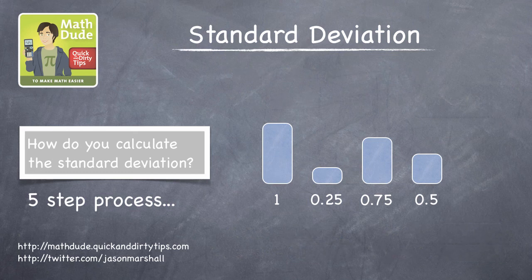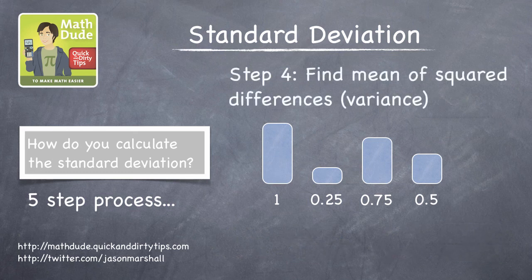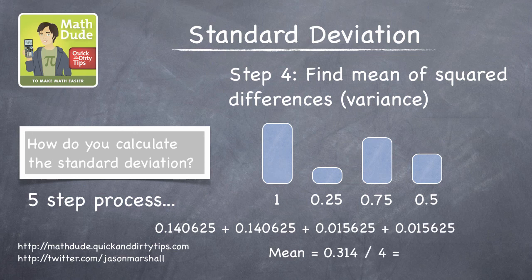Okay, step four is to find the mean of these squared differences. This value, 0.0785 in this case, is also known as the variance.